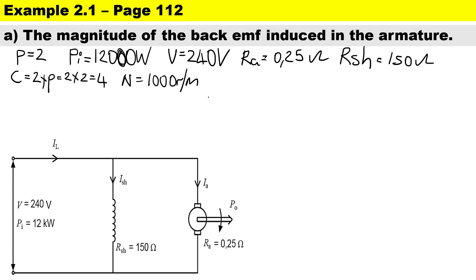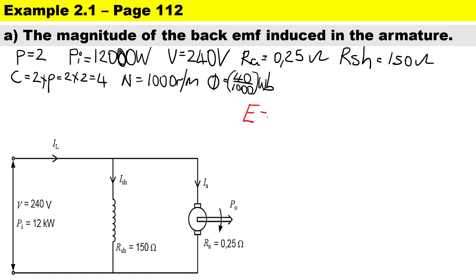The flux per pole is 40 milliweber. To convert milliweber to weber, divide by 1000. We must always convert milliweber into weber. Since this is a shunt wound motor, the formula to calculate the generated EMF is: E = V − I_a × R_a. There is no shunt brush resistance, so that is the formula we will use.